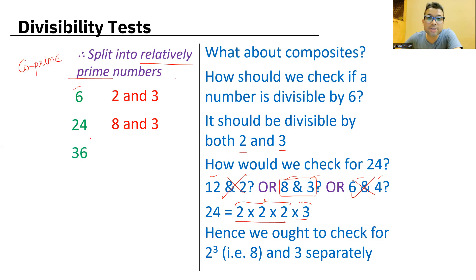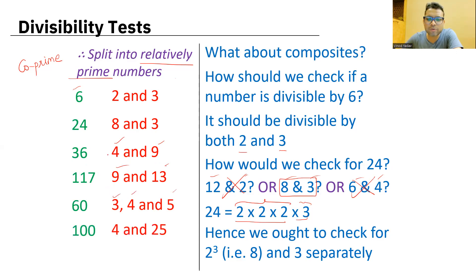So what we do for 36? Co-prime pairs: 4 and 9. And luckily we know the test for them. 117, for example, yes, 9 and 13. And we know the test for them. 60: split this into 3, 4 and 5. And we know the test for all three. 100, for example, 4 and 25 like that, friends. So for bigger numbers, you can split that bigger number into co-prime numbers.